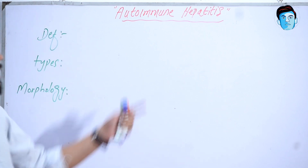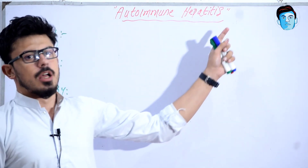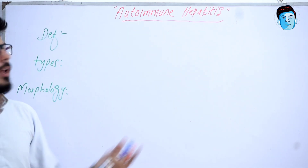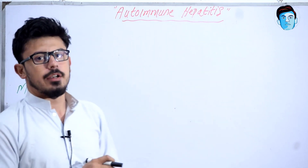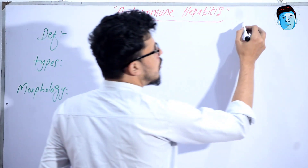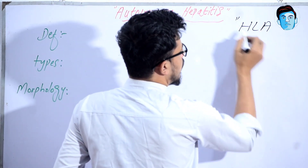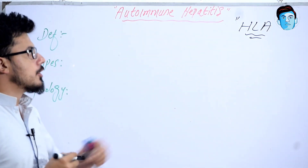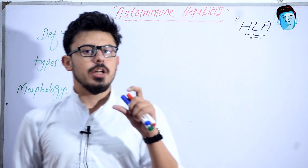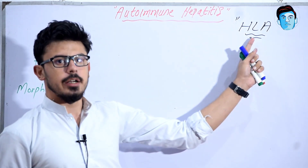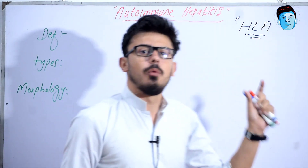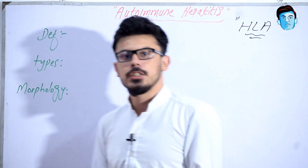Assalamu alaikum doctors. Let's talk about autoimmune hepatitis. Autoimmune hepatitis means our body's own immunity activates against our own liver cells, causing inflammation of that liver. It is mostly associated with the human leukocyte antigen (HLA), which is present in almost every cell of the body. If any mutation occurs in HLA, our own body recognizes it as a foreign antigen.